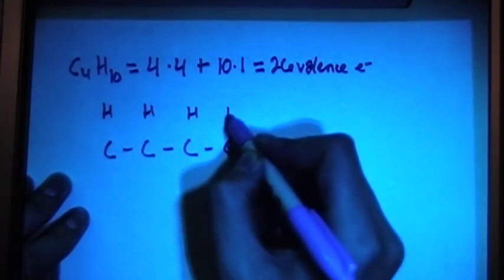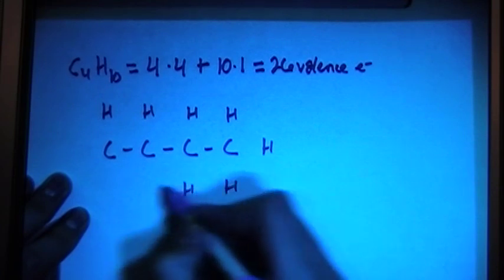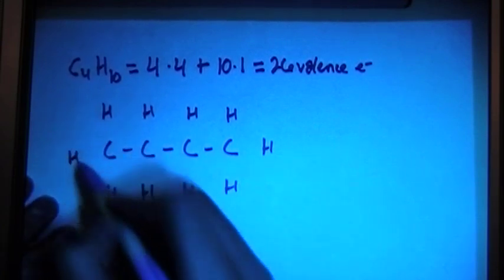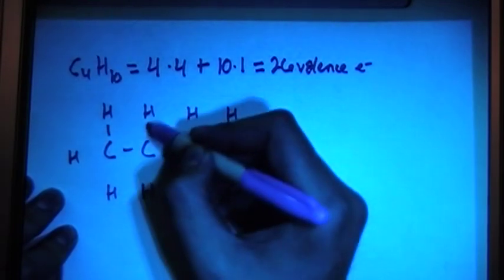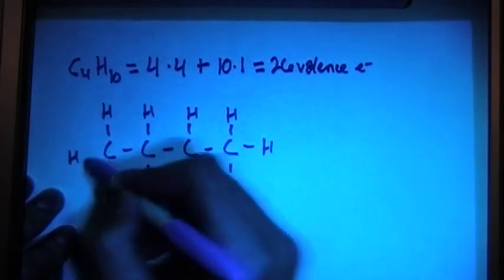And keep in mind that every carbon needs to have four bonds total, or four surrounding atoms, whether they're carbons or hydrogens. So we can go ahead and connect all these hydrogens with single bonds, and then we'll see how many electrons this is.